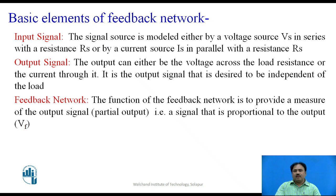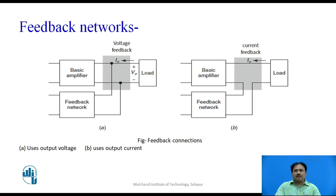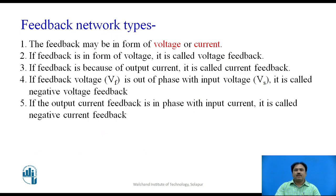The feedback network uses electronic components, normally passive components such as resistors, which modify the voltage according to the output. Looking at two simple forms of feedback: on the left-hand side we are feeding back the voltage as the input of the feedback network, so it is called voltage feedback. On the right-hand side we feed the output current through the feedback network, so it is called current feedback. In summary, feedback can be either voltage or current feedback.